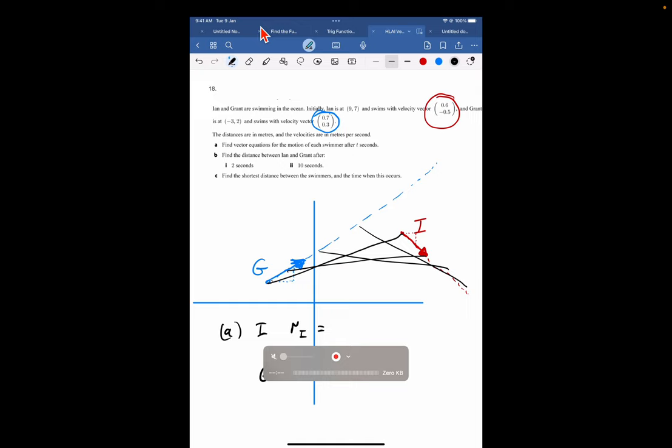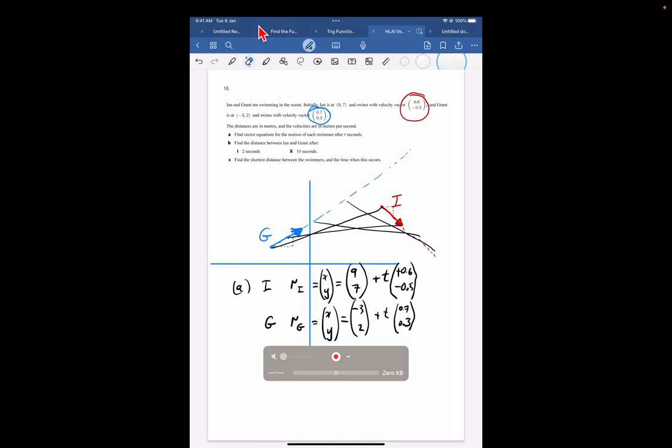Find the distance between Ian and Grant after 2 seconds and 10 seconds. So now we're into the world of Pythagoras, right? So we're into the world of Pythagoras and the distance between two points. So Pythagoras, distance between two points. It might be easier to write down the x.